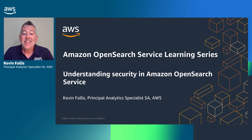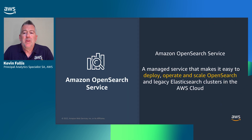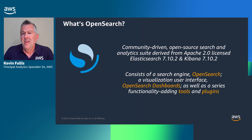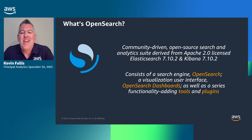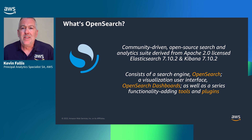Today we're going to understand security in the Amazon OpenSearch service. The Amazon OpenSearch service is a fully managed service that makes it easy to deploy, operate, and scale OpenSearch clusters and legacy Elasticsearch clusters on the AWS cloud. OpenSearch is a community-driven open source search and analytics suite derived from Apache 2.0 licensed Elasticsearch 7.10.2 and Kibana 7.10.2. It consists of a search engine called OpenSearch, a visualization and user interface called OpenSearch Dashboards, as well as a series of functionality-adding tools and plugins — such as the security plugin I'm going to discuss in the slides following on.